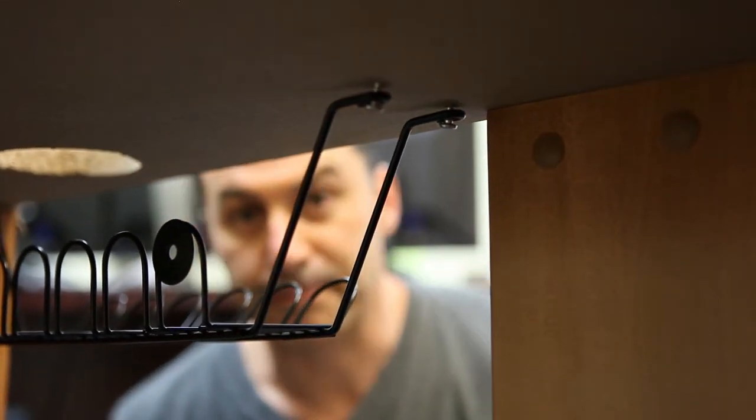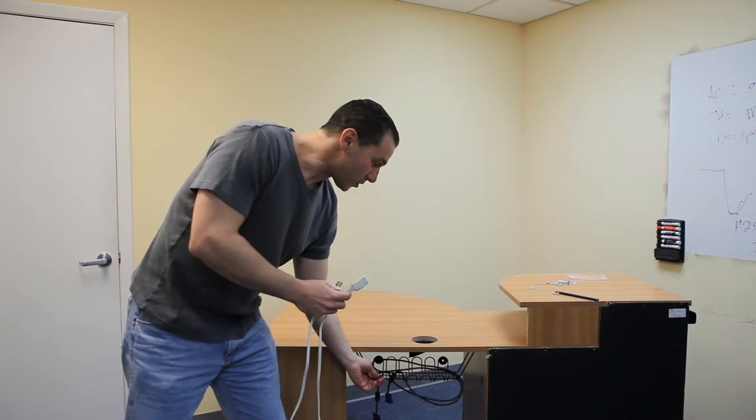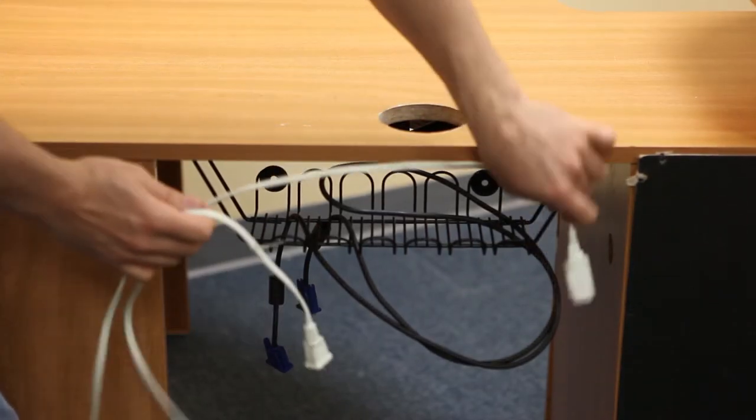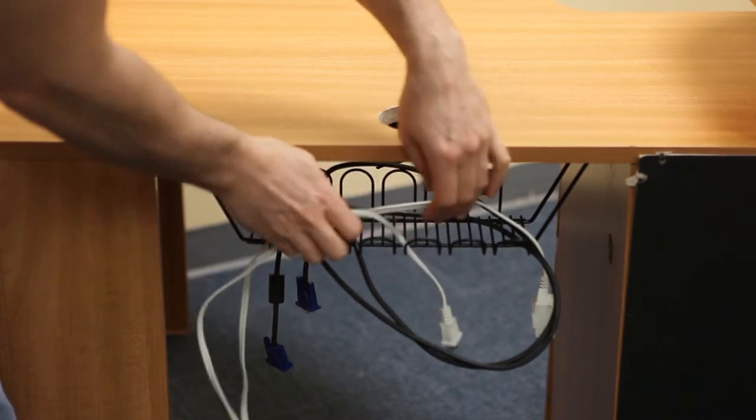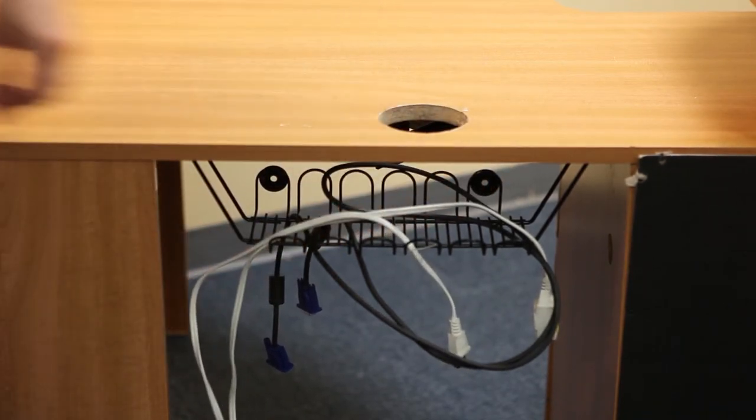And we're all set. Once the cable tray is installed underneath, you can use the cables any way you want, or you can put the cables in any way you want. You can just lay them on top or use the loops that are available.